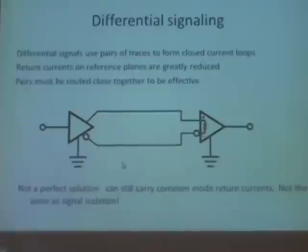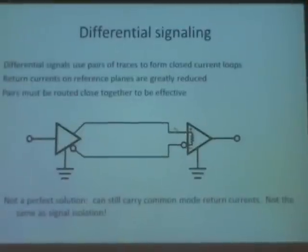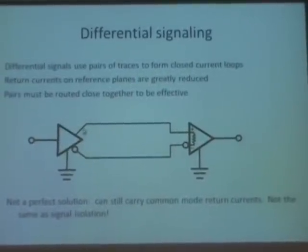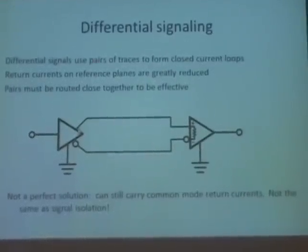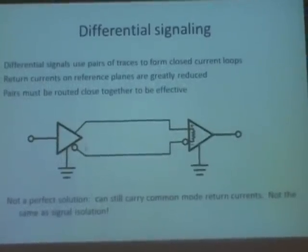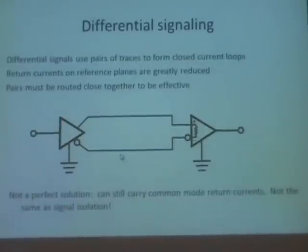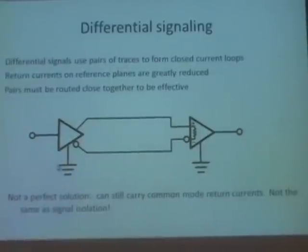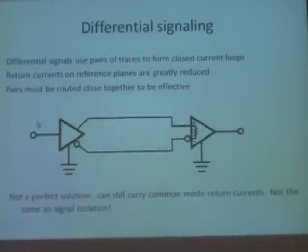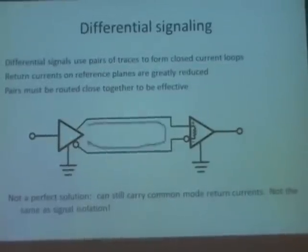Differential signaling is not perfect though — it limits, but doesn't eliminate, currents inducing the ground plane. Also, this doesn't provide isolation. If one gate's ground shifts slightly from the other's, you'll get common-mode currents flowing between them. Do not think of this as isolation — think of it as attenuation of differential signals and return currents. Big difference.